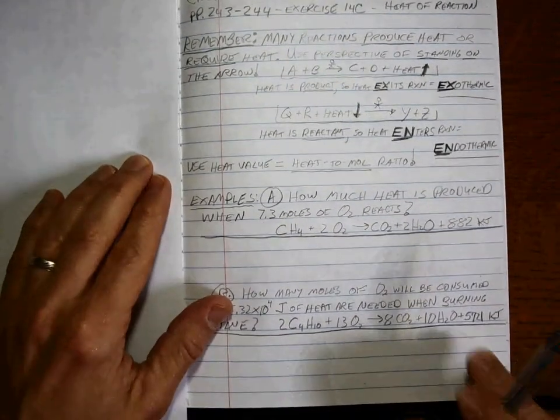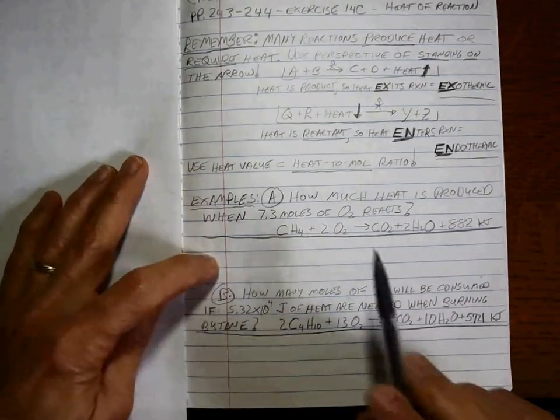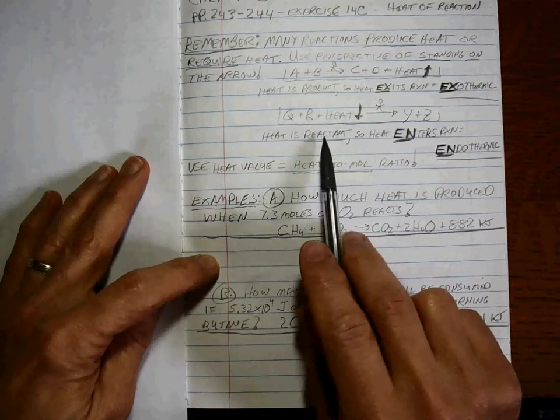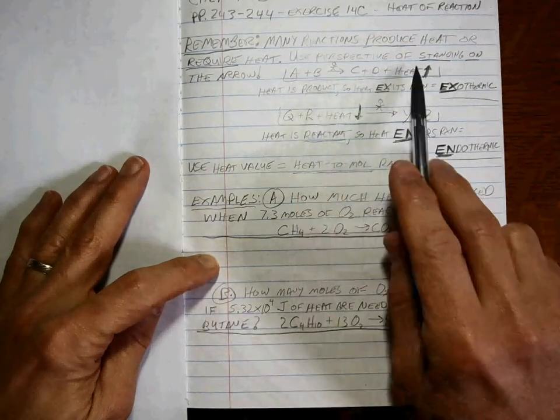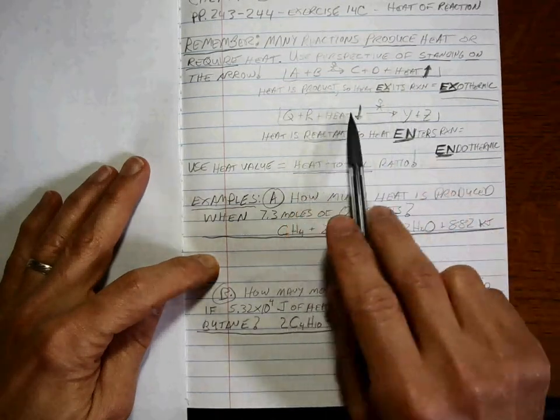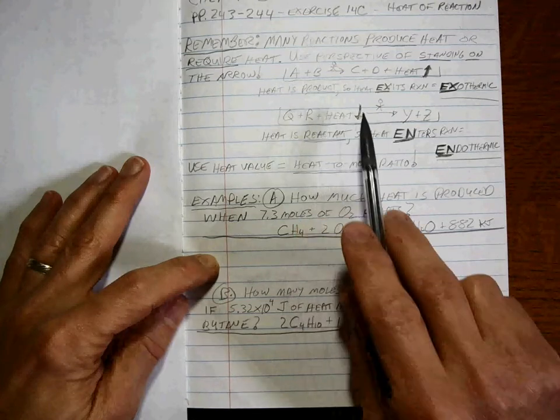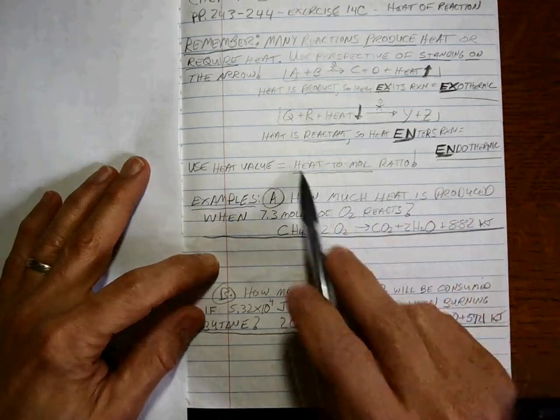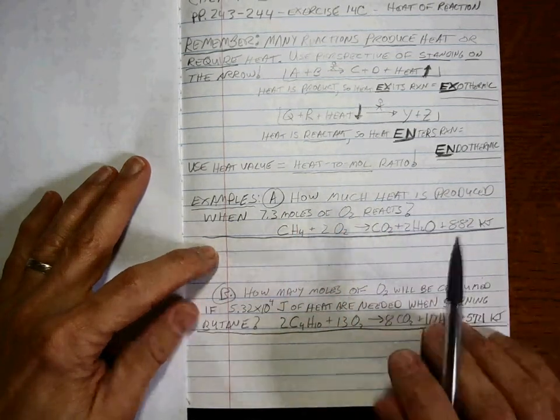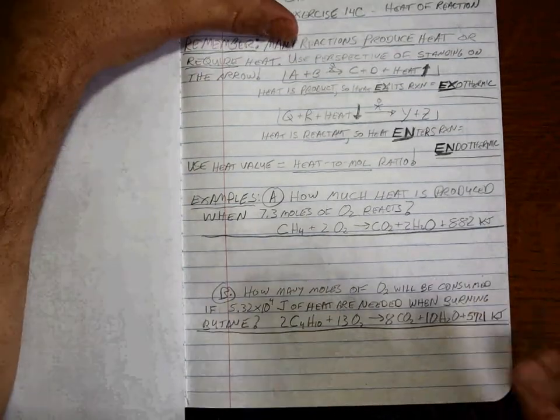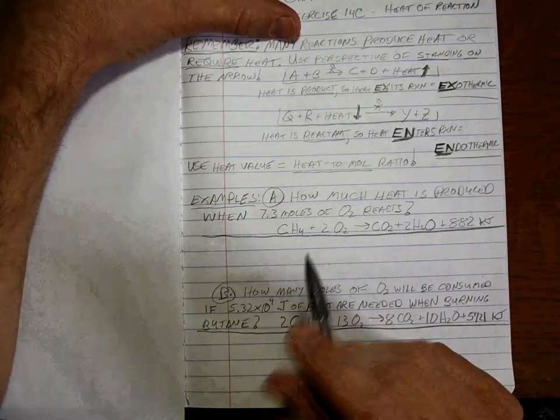Now, to do the calculations, this is really pretty simple. Since heat is either a reactant or product, you can use it just like an actual reactant or product. You just use the heat-to-mole ratio, and different reactions have different heat involved. So these problems are really very simple.